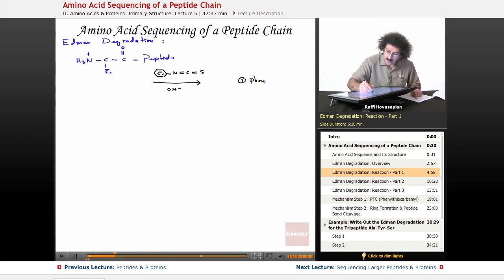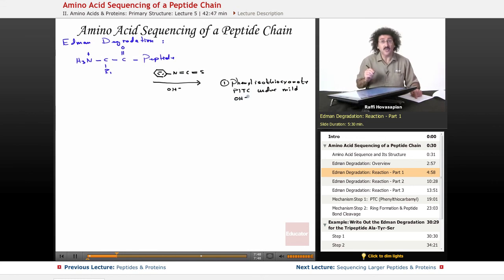So one, phenyl isothiocyanate, that is this molecule right here. It's abbreviated PITC, phenyl isothiocyanate under mild basic conditions, alkaline conditions. Under mild OH. This is the Edman reagent. So you'll often hear it, they might say PITC or they'll just say, use Edman reagent. So this is our Edman reagent. This is called the Edman reagent.